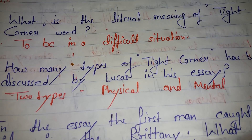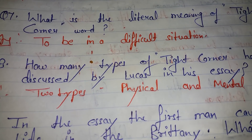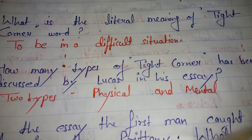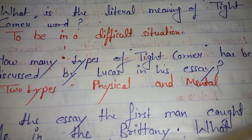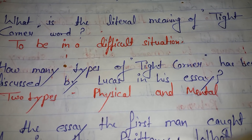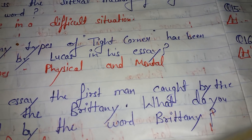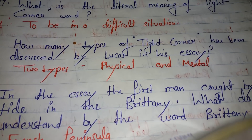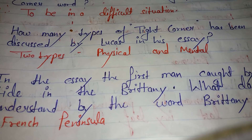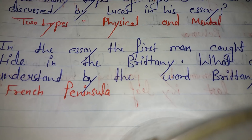What is the literal meaning of the word 'tight corner'? The literal meaning is to be in a difficult situation. Two types of tight corners have been discussed by Lucas in his essay: physical and mental.